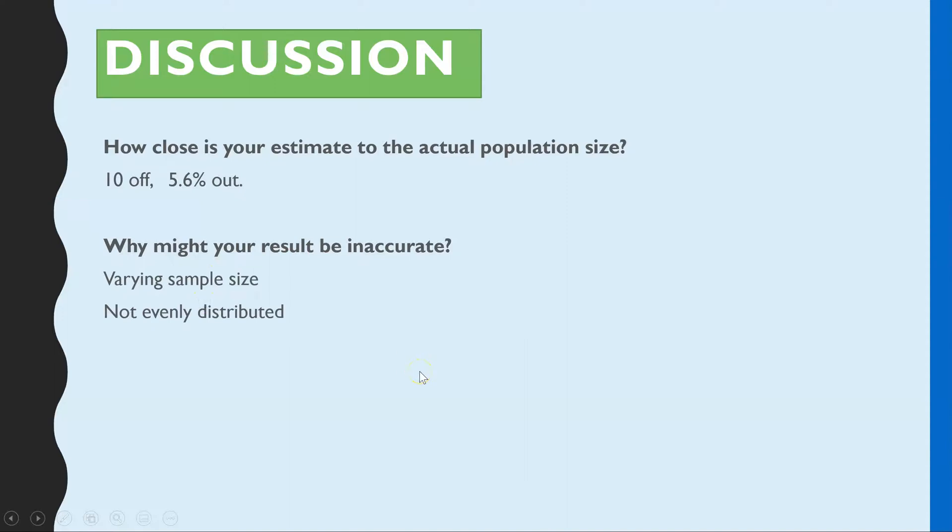And some of the reasons that I came up with was the sample sizes that I took in each scoop, so each capture, weren't the same, and that did cause some variation in the result from the calculation each time. Also, the greens that were put back in each sample that was put back might not have been evenly distributed, so I might have been capturing the same Skittles over and over again, which isn't representing the population accurately.